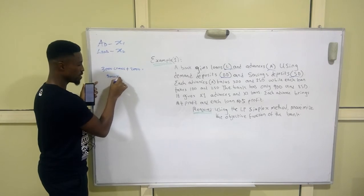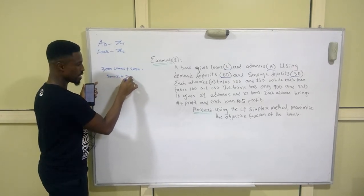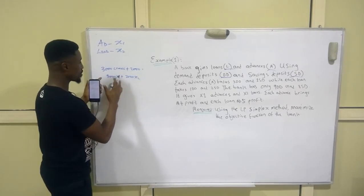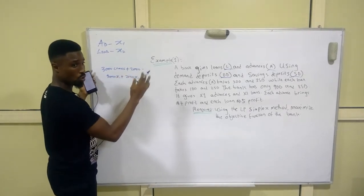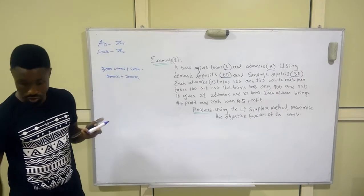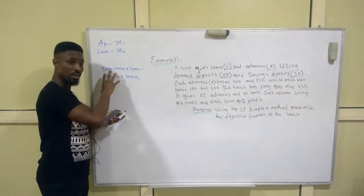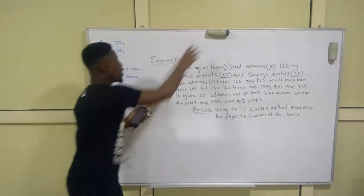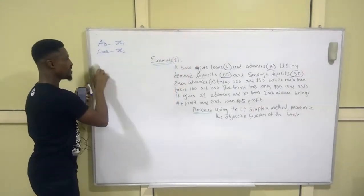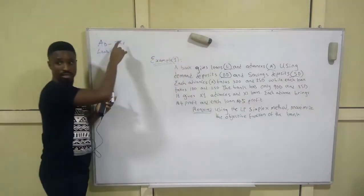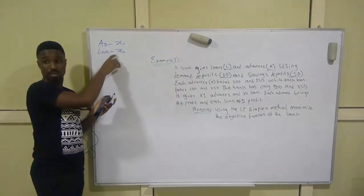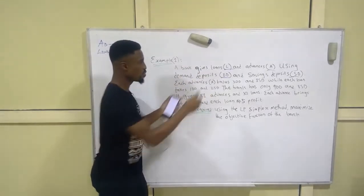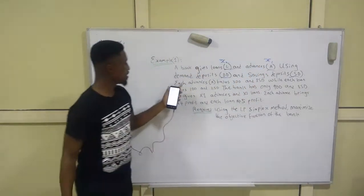We put it in an equation format — something like 3000x1 plus 2000x2 — so you don't have to write everything out in full and get confused. These are representations: anywhere we see advances we use x1, and anywhere we see loans we use x2.